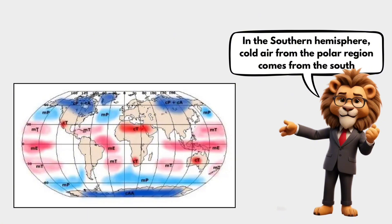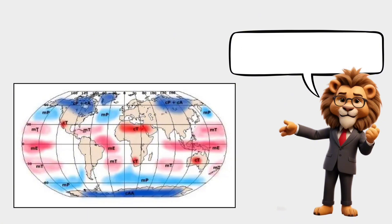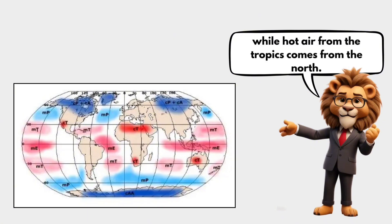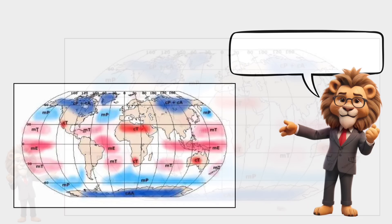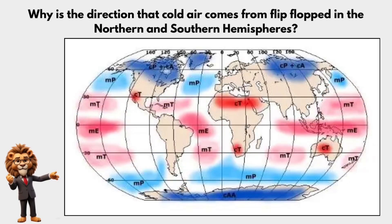In the southern hemisphere, cold air from the polar regions comes from the south, while hot air from the tropics comes from the north. Why is the direction that cold air comes from flip-flopped in the northern and southern hemispheres?